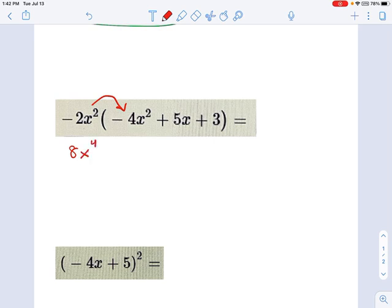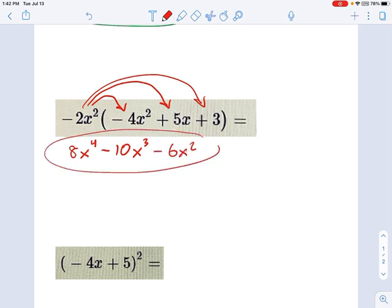Now let's do this next one. Negative 2x-squared times positive 5x. Well, negative 2 times 5 is negative 10. And x-squared times x is x-cubed. You add up the exponents. And last one here. Negative 2x-squared times positive 3 simply makes negative 6x-squared. Okay? And we're done with that one.